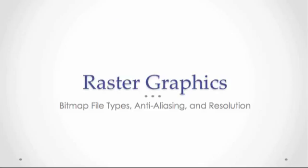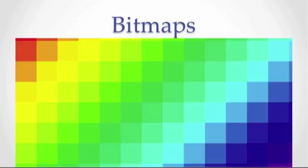First off, raster graphics. Raster graphics are bitmapped file types, and each image is a map of bits or dots, like you see on the screen. This is a blown-up version. As the computer reads a bitmap, the file tells the computer what color each little bit in the map is supposed to look like, and then the graphic processor displays that color or shade.